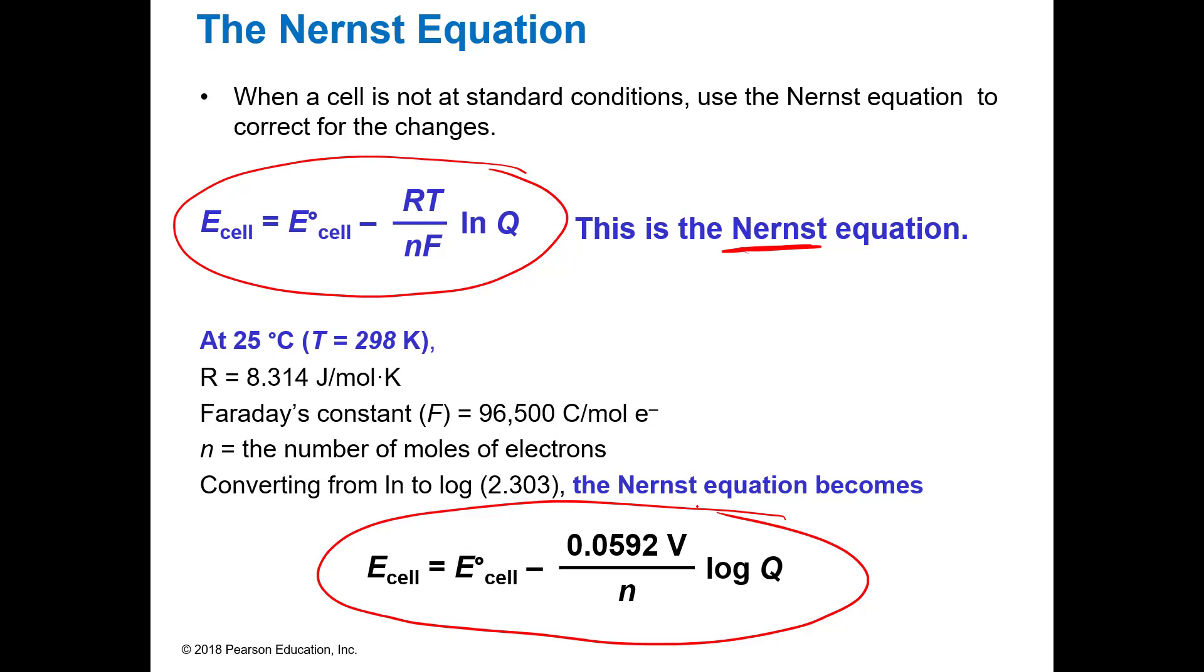This is assuming though that we are still at 25 degrees C, still at room temperature. Now if you change the temperature you would have to use this one. But at room temperature we can actually use, we've done some of the math for you already. We use the standard cell potential and then use this as the correction: 0.0592 volts divided by n, which is the number of moles of electrons.